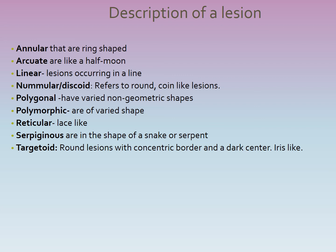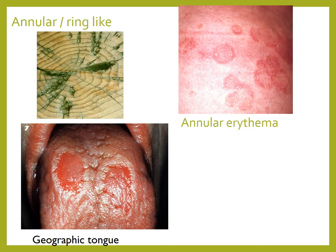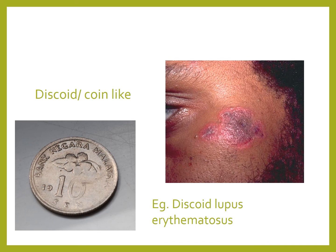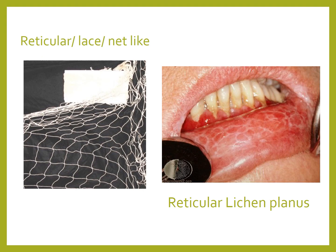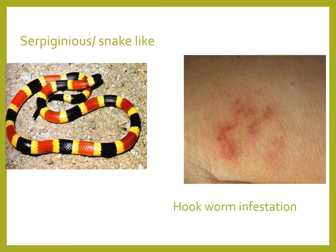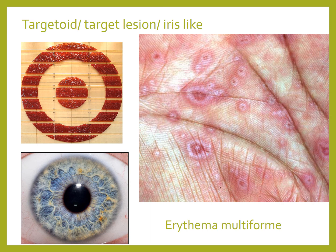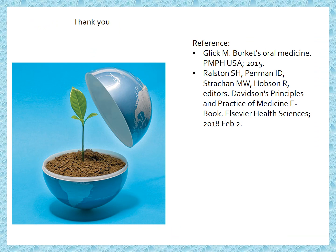Other terminology for larger lesions includes: annular or ring-like, seen in geographic tongue or annular erythema on the skin; discoid or coin-like, as in discoid lupus erythematosus; linear, as in linear marginal gingivitis or lichen planus of the nails; reticular or lace-like, as in reticular lichen planus; serpiginous or snake-like, more often seen on skin as in hookworm infestation; and target-like, targetoid, or iris-like lesions, which are classical for erythema multiforme. That brings us to the end of this description.